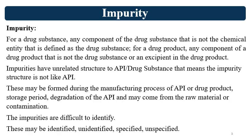First is impurity. As per the USP definition, for a drug substance, any component of the drug substance that is not the chemical entity defined as the drug substance; or for the drug product, any component of a drug product that is not the drug substance or an excipient in the drug product. Simply, impurity may be present in the drug substance or in the drug product — it is not a component of the drug, not part of the drug product, not a drug substance, and not an excipient.